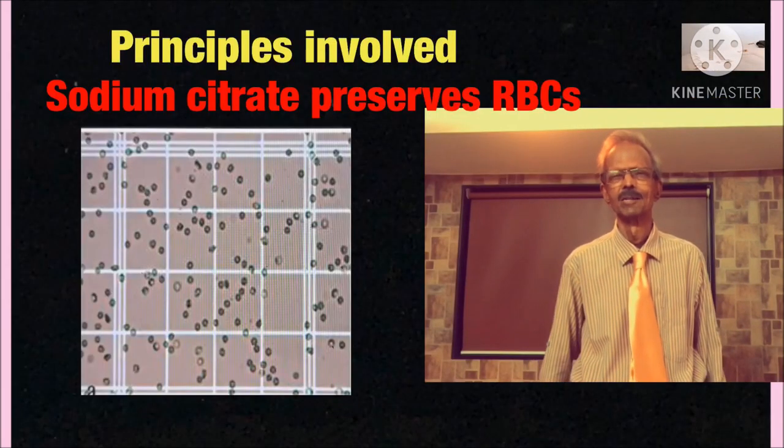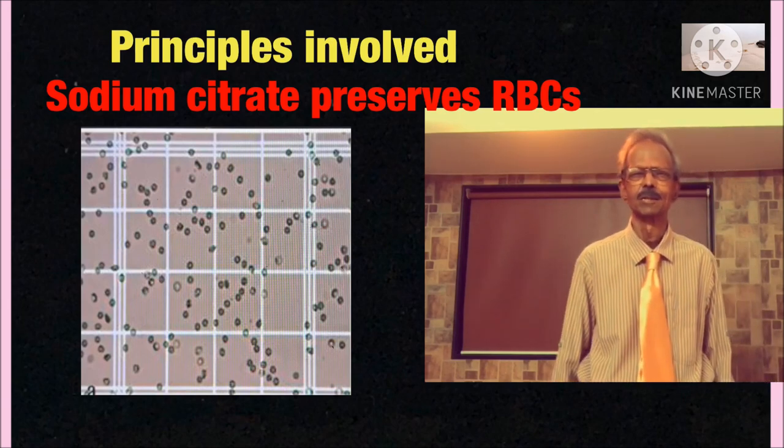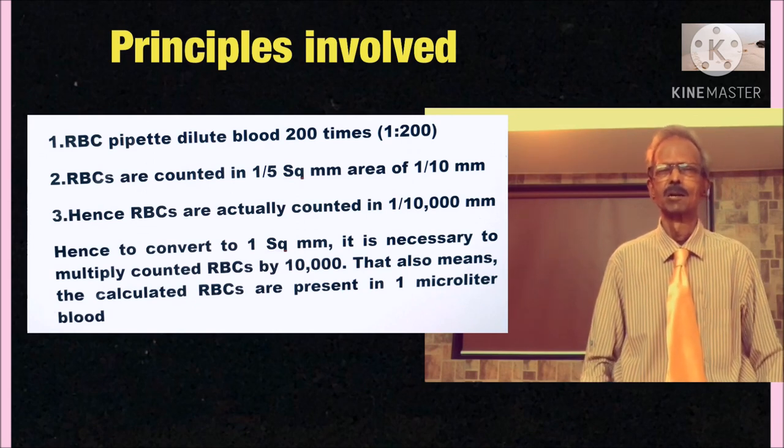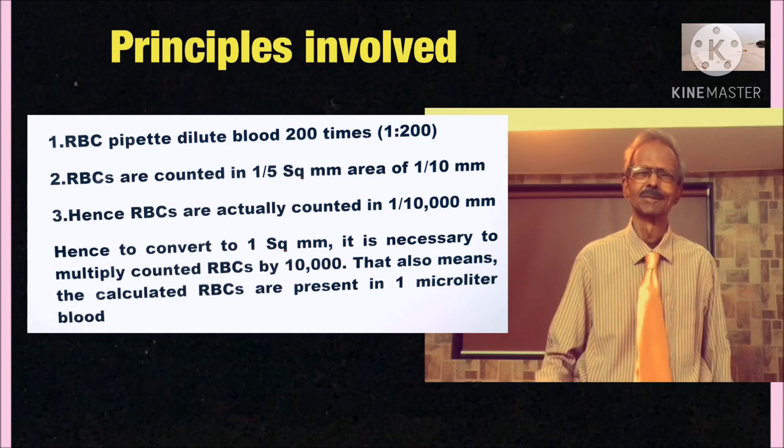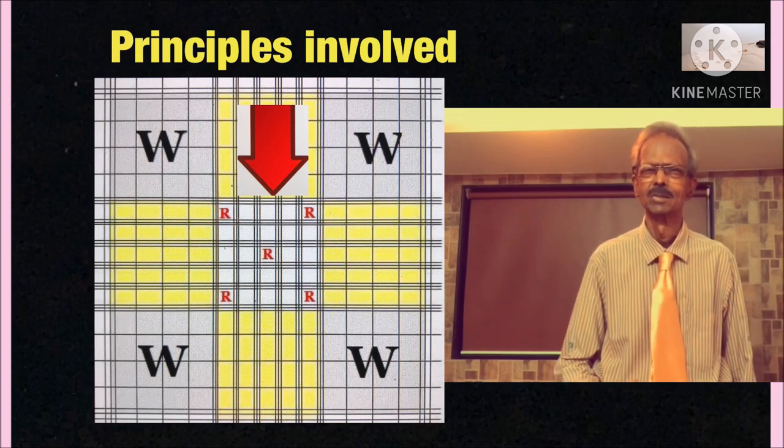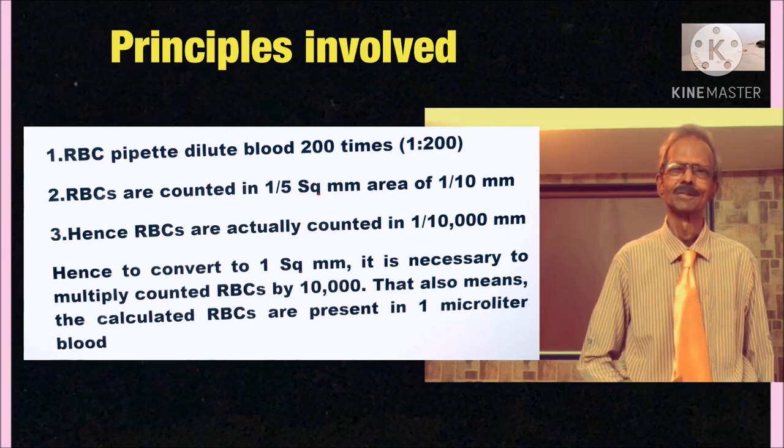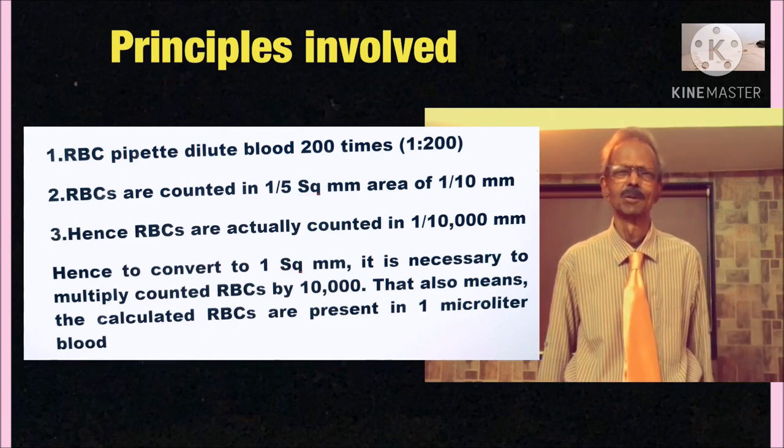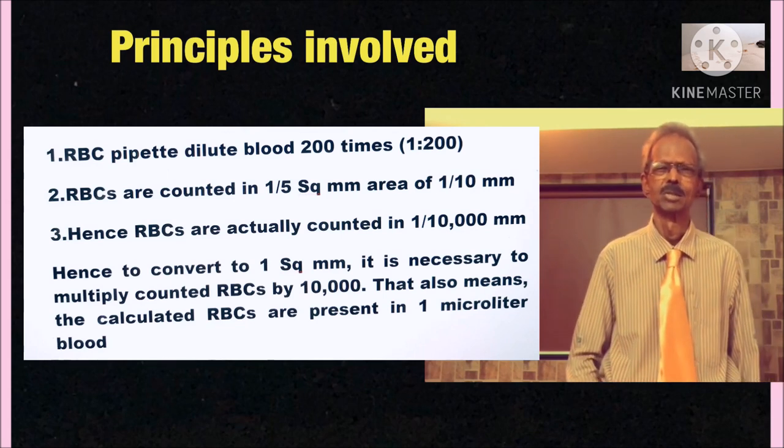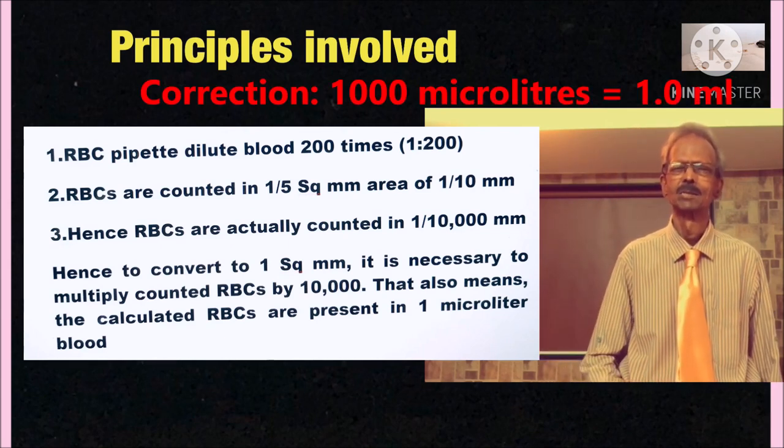The principles involved in RBC count are: First use of 3% sodium citrate which preserves the morphology of cells. RBC pipette dilutes blood 200 times. Cells are counted in 1/5th part of 1 square millimeter of RBC area. And the depth of counting area is equal to 0.1 mm. Hence cells are actually counted in 1 divided by 10,000 part of 1 cubic millimeter. Hence to get count for 1 cubic millimeter it is necessary to multiply counted cells by 10,000 and cells are then equivalent to 1 microliter of blood. And yes remember 10,000 microliter make 1 ml.